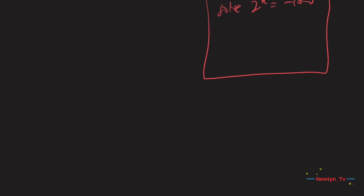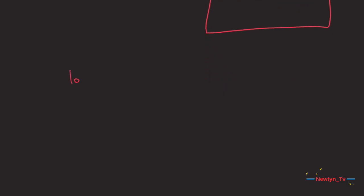Sometimes the terms of an exponential equation cannot be rewritten with a common base. In these cases, we solve by taking the logarithm of each side. Recall that log of a equal to log of b is equivalent to a equal to b. So we may apply logarithms with the same base on both sides of the exponential equation.